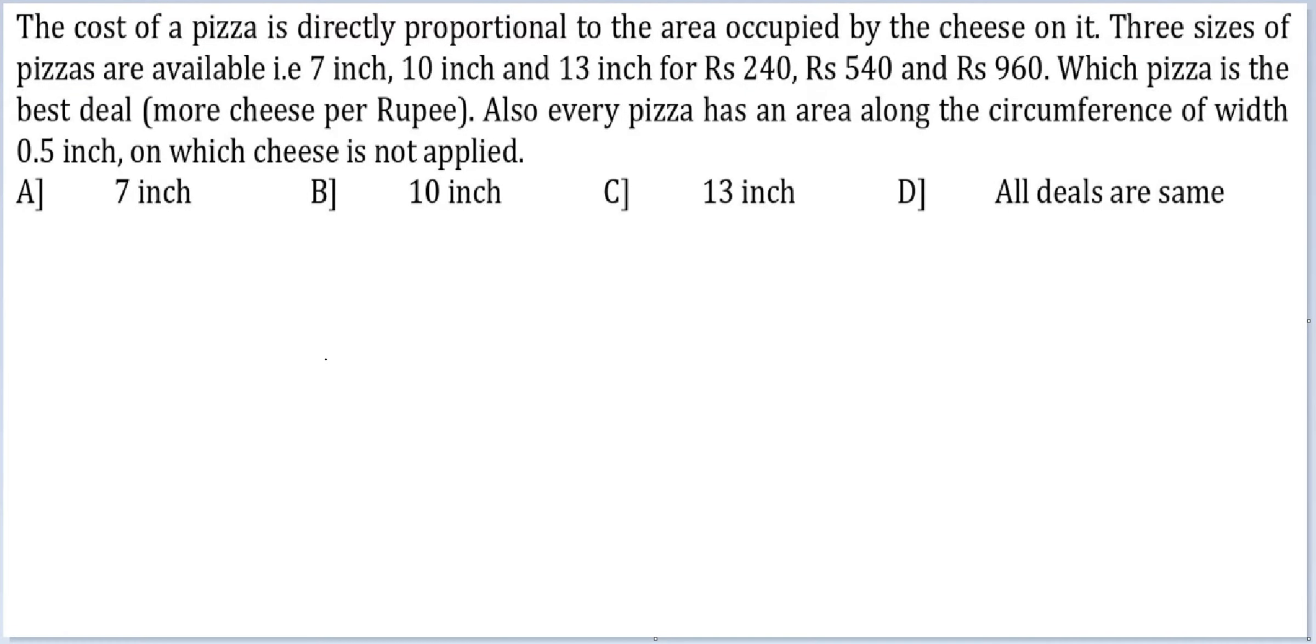Let's look at this question. The cost of a pizza is directly proportional to the area occupied by the cheese on it. The three sizes of pizza available are 7-inch, 10-inch and 13-inch for rupees 240, 540 and 960. Which pizza is the best deal? More cheese per rupee. Also every pizza has an area along the circumference of width 0.5 inch on which the cheese is not applied.